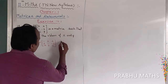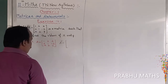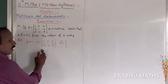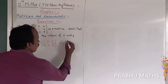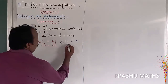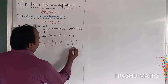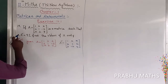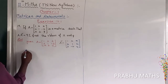Next, find A transpose. A transpose is obtained by interchanging rows to columns and columns to rows. So A transpose equals [1, 2, X; 2, 1, 2; 2, -2, Y].